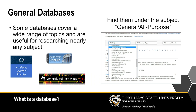Some of our most popular databases are categorized as general or all-purpose. Because they cover such a wide range of topics, users can almost always find useful resources. Three of the most popular are Academic Search Premier, Academic One File, and Omni File Full Text.